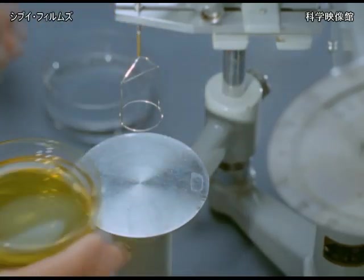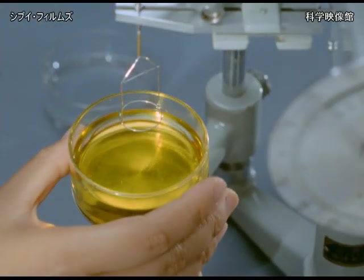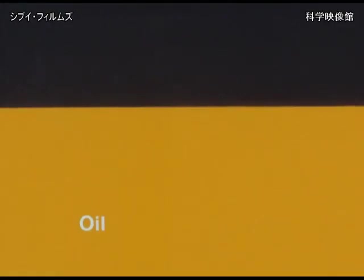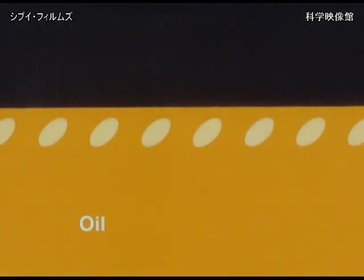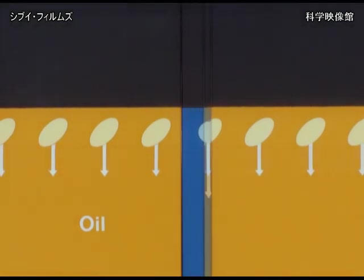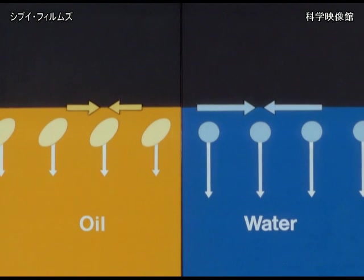Every liquid has a fixed value of surface tension. Oil, for instance, has a lower surface tension than water, because the internal forces working on the surface oil molecules are less than those affecting water molecules.